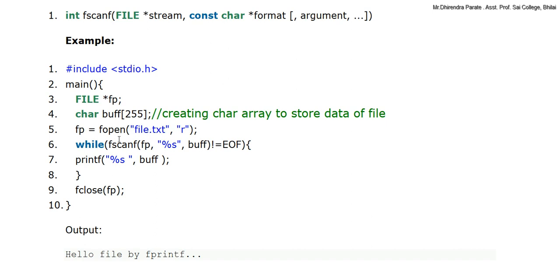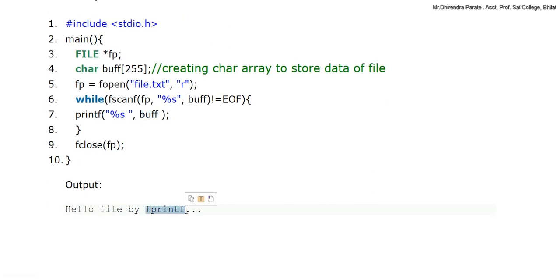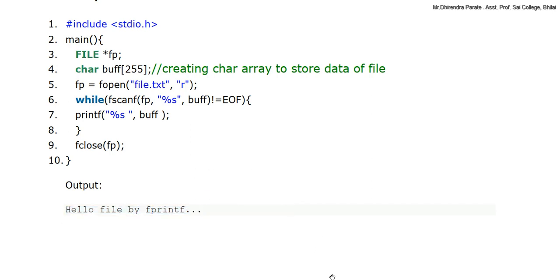We read the file word by word. Using fp equal to fopen with the file in reading mode, then while fscanf(fp, "%s", buffer) is not equal to EOF — meaning the last character has not been reached and the end of file has not occurred — the loop continues. We print using printf with %s and buffer to display the words read. Here we will read and print the content. The output will be the content written in the file, such as 'hello file by fprintf'. Then we close the file using fclose.